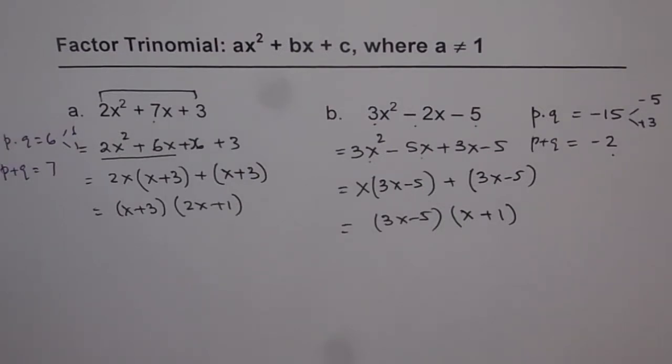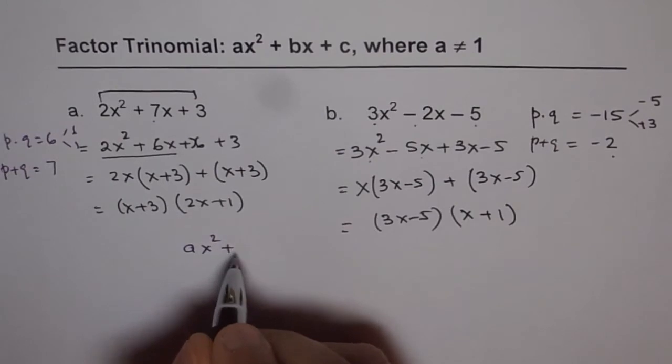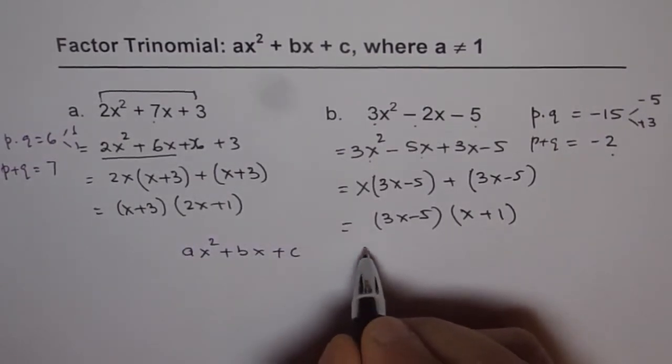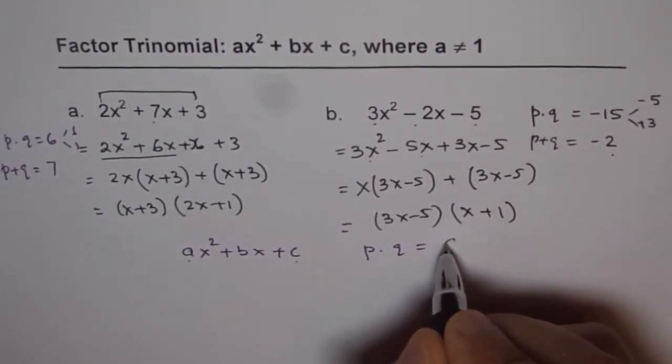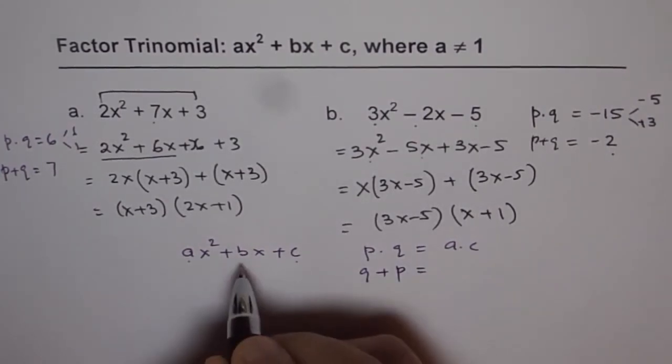I hope you understand the strategy. The strategy is to find two numbers. So, if we have, in general, any equation of the form ax² + bx + c, then we are looking for two numbers, p and q, whose product should be equal to the product of a and c. And whose sum, that means p + q, is equal to b.